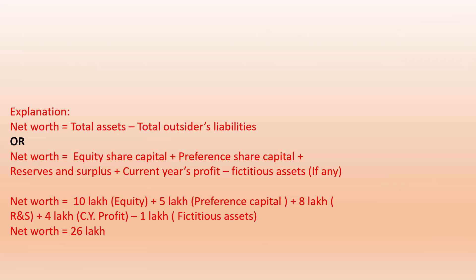For total assets, only 3 aspects are included: fixed assets, long-term investments, and current assets. Fictitious assets, even if present, are not included here for net worth calculation. Net worth = Total assets minus total outsider liabilities. Outsider liabilities include bank loans, debentures, current liabilities, and provisions created. After deducting all these, what remains is your net worth — which is shareholders' wealth for both equity and preference shareholders.